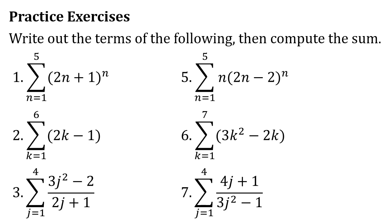For the practice exercises, write out the terms then compute the sum. Number 1: the sum of (2n+1)^n as n goes from 1 to 5. Number 2: the sum of (2k−1) as k goes from 1 to 6. Number 3: the sum of (3j²−2)/(2j+1) as j goes from 1 to 4. Number 5: the sum of n×(2n−2)^n as n goes from 1 to 5. Number 6: the sum of (3k²−2k) as k goes from 1 to 7. Number 7: the sum of (4j+1)/(3j²−1) as j goes from 1 to 4.